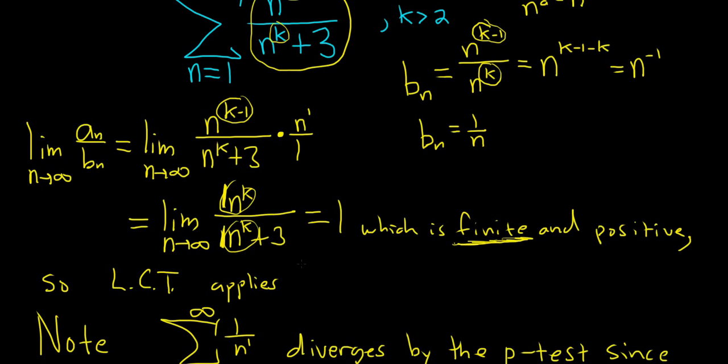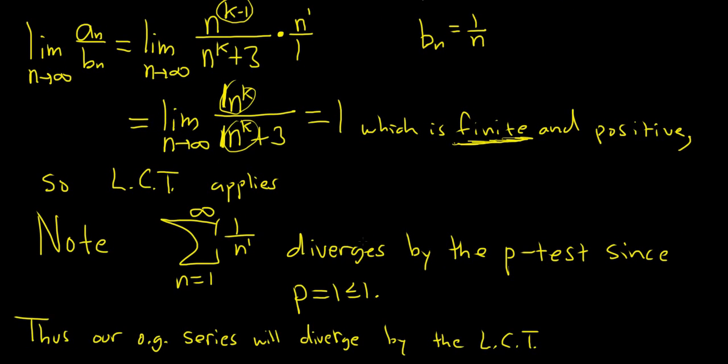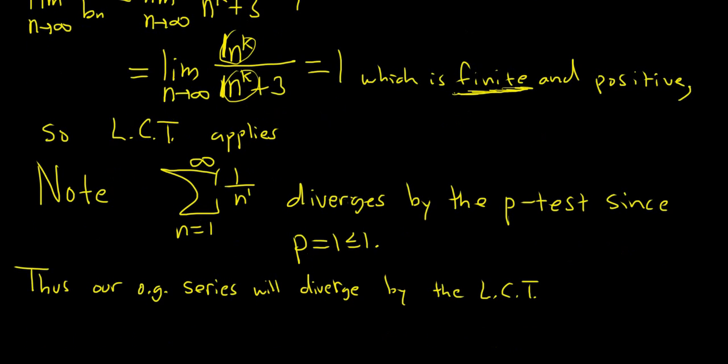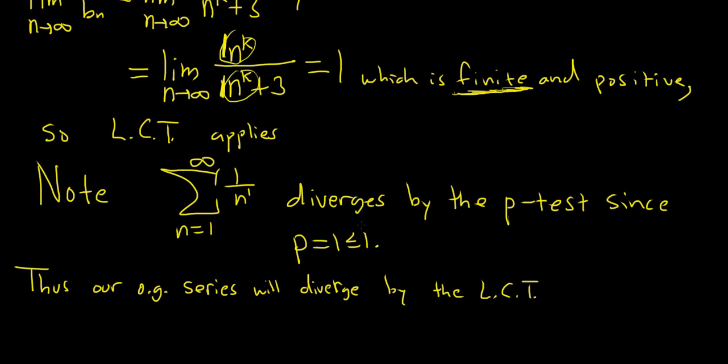If you do it correctly, it's always going to be finite and positive. So you just say it. Then you say, so limit comparison test applies to let the reader know that, okay, you verified that you can use the test. Then you figure out what your B's do. So if your B's diverge, then your answer is diverge by limit comparison. If the sum of the B's converges, then your answer is converged by the limit comparison test.